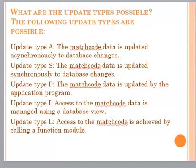What are the update types possible? The following update types are possible. Update Type A: The match code data is updated synchronously to database changes. Update Type S: The match code data is updated synchronously to database changes. Update Type P: The match code data is updated by the application program. Update Type I: Access to the match code data is managed using a database view. Update Type L: Access to the match code is achieved by calling a function module.